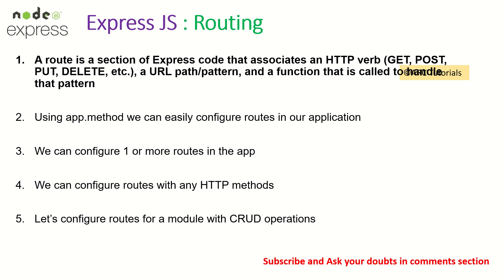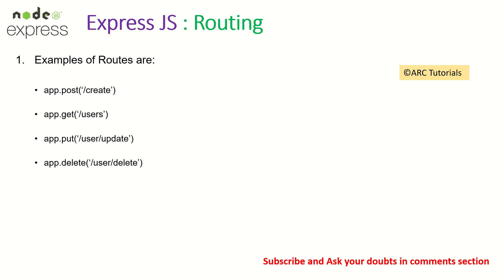Now let's learn how to create them. This is a simple way of creating routes: app.post, app.get, app.put, app.delete. I will show you both, and at the end I will show you what the problem is with this approach and how to fix it.